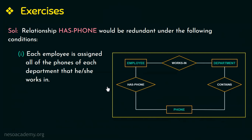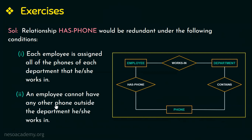The next condition is an employee cannot have any phone outside the department he or she works in. In this case, if an employee cannot have any phone outside the department, then this relationship is not required, because the information about the phone each employee uses within the department can be derived from the other relationships. Hope you have understood these two conditions where the relationship has-phone would be redundant.